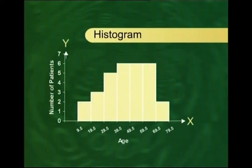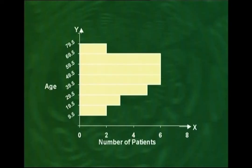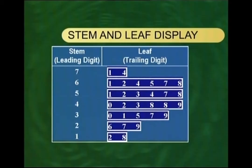Converting this frequency distribution into a histogram, we obtain what you now see. The histogram is approximately symmetric, or better said, slightly negatively skewed. If I rotate this histogram by 90 degrees, I obtain what you see on screen — which looks exactly like our stem and leaf display. So the stem and leaf display looks exactly like the histogram.